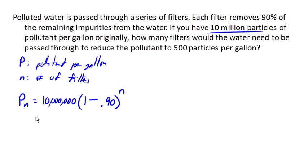Or, more simply, 10 million times 0.10 to the N. Now to answer our question, we want to know when the pollutant will be 500. So we're going to set our equation equal to 500.